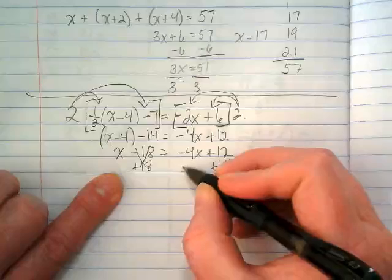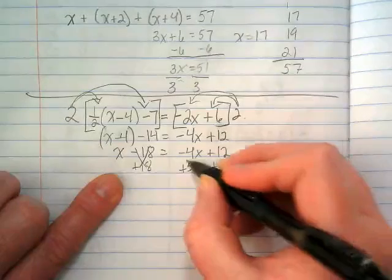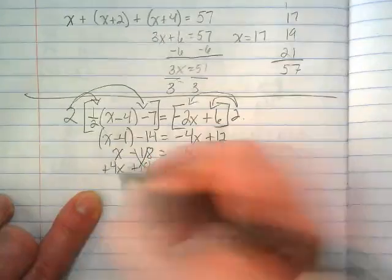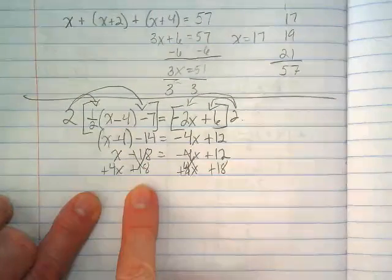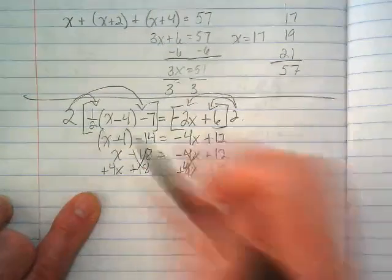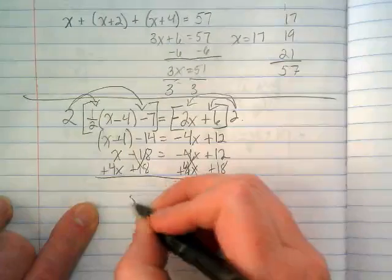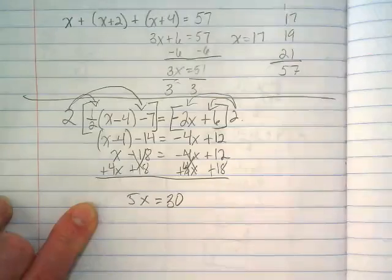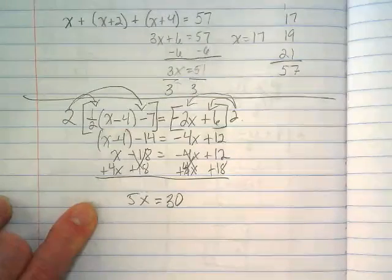I'm going to finish real quick, so just stay with me. And then we're going to add the 4x to both sides. By doing that, I see that I've zeroed out the numbers here and the x terms here. We get 5x is equal to 30. Divide by 5, we get 6.